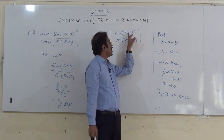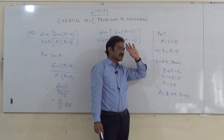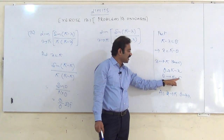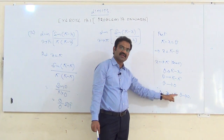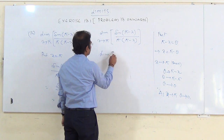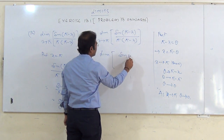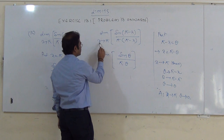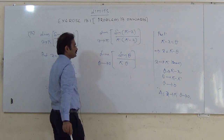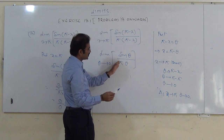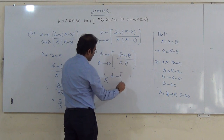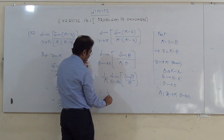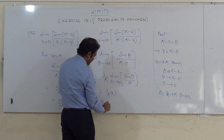With this substitution, π − x = θ, so sin(π − x) = sin θ and the denominator π(π − x) = πθ. Therefore the limit becomes limit of sin θ / (πθ) as θ tends to 0. Taking 1/π as a constant outside: (1/π) × limit of sin θ / θ as θ tends to 0 = (1/π) × 1 = 1/π.